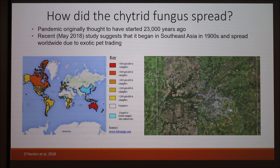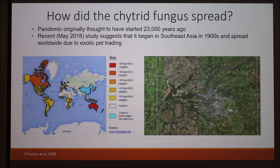Audience question: You said the skin absorbs nutrients — can you give some examples? The speaker responds: A lot of the electrolytes they use are absorbed through their skin, which is why the disease causes a huge electrolyte imbalance — things like sodium. In lungless salamanders, because some salamander species don't have lungs, this fungus actually causes them to not be able to breathe since they breathe through their skin, and then they suffocate and die.